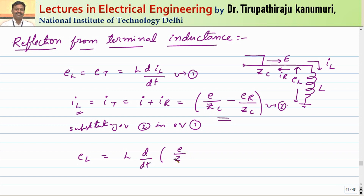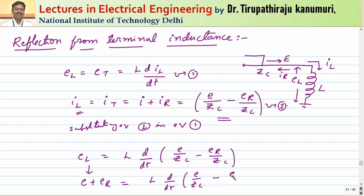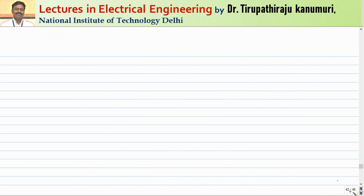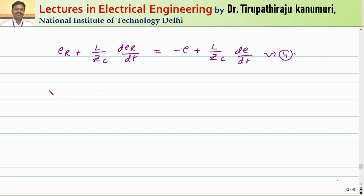Since el equals e plus er (the voltage at any instant is incident plus reflected voltage), substituting gives: e plus er equals L into d/dt of (e/Zc minus er/Zc) — equation 4. Rearranging so that er-related components come to one side and e components to the other, we get: er plus (L/Zc) into d(er)/dt equals minus e plus (L/Zc) into d(e)/dt (equation 4).